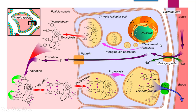This image shows us the synthesis process — how the thyroid hormones are synthesized. Looking at this schematic, the part labeled as endoplasmic reticulum: the rough endoplasmic reticulum synthesizes thyroglobulin. Thyroglobulin contains tyrosine residues, and we have just seen the structure which clarifies this.